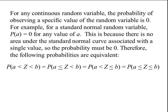For any continuous random variable, the probability of observing a specific value is 0. For example, for a standard normal random variable, the probability that z equals any specific value a is 0, because there is no area under the standard normal curve associated with a single value. Therefore the following probabilities are equivalent: P(a < z < b) equals P(a ≤ z < b) equals P(a < z ≤ b) equals P(a ≤ z ≤ b), since the probability of a single value is 0.